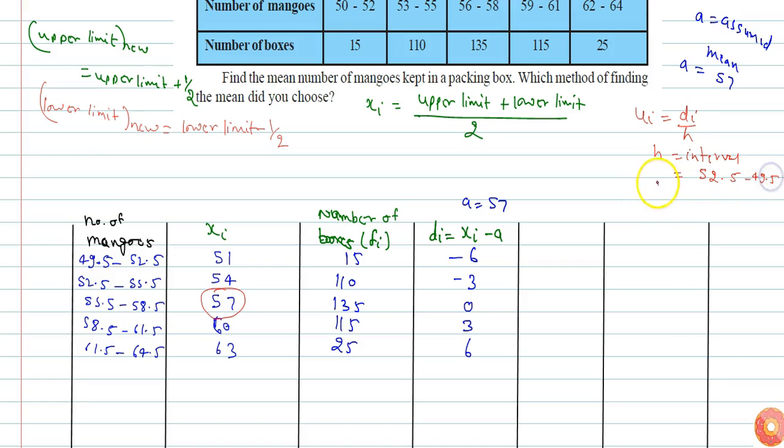So class size is nothing but the interval, 52.5 minus 49.5, so value of h is 3. So here the next column is for ui. Ui is di by h, so h is 3. So minus 6 by 3 is minus 2, minus 1, 0, 3 by 3 is 1, 6 by 3 is 2.